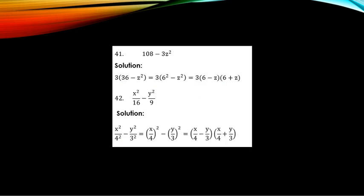Example 41: Factorize 108 minus 3Z². Since 3 and 108 are not perfect squares, factor out 3 first — the lowest common term. Factoring out 3 gives 3(36 minus Z²). You can express 36 as 6 squared, giving 3(6² minus Z²), which is a difference of two squares. This factors as 3(6 minus Z)(6 plus Z).